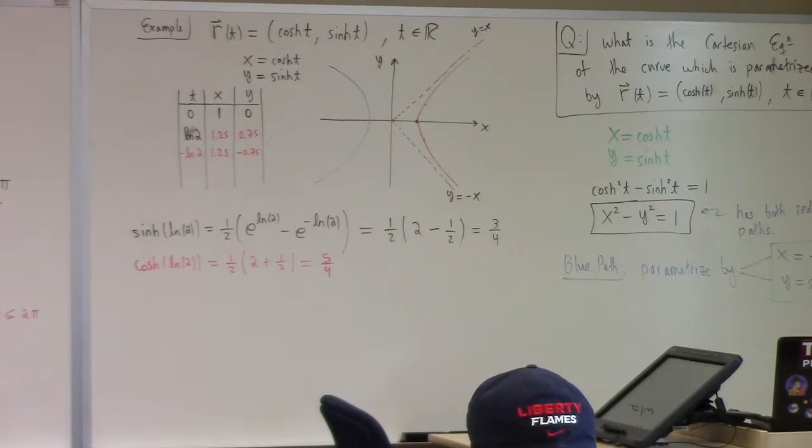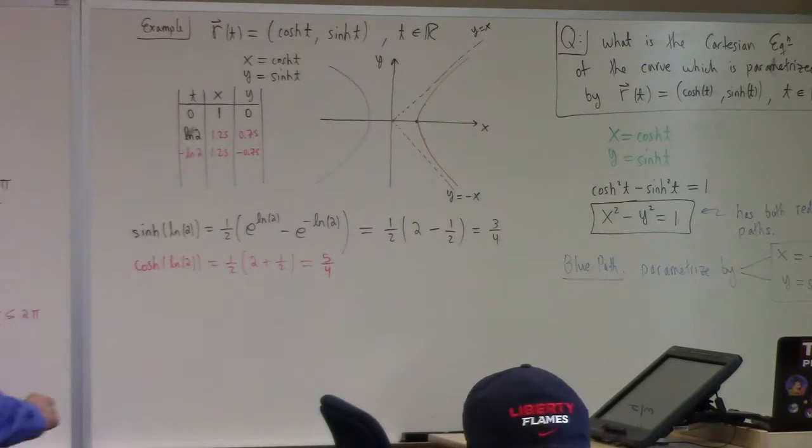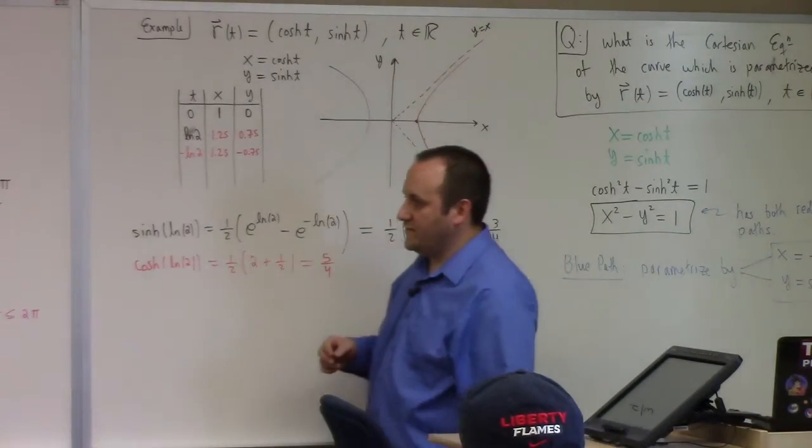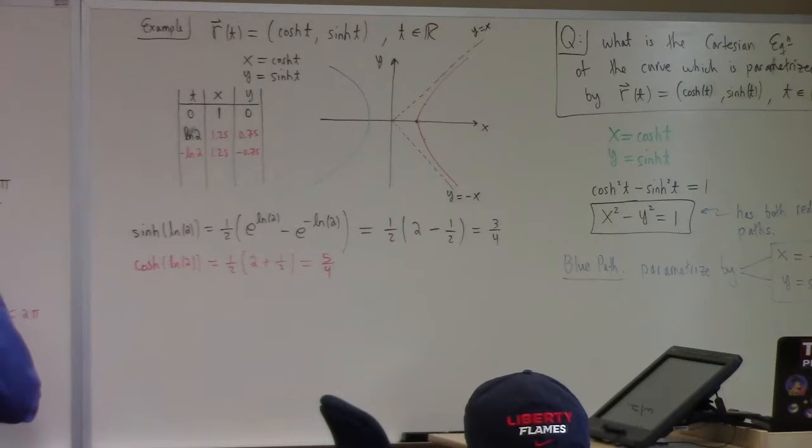So you're saying go from 0 to pi, but use minus 3 sine t instead? Yeah, that would also work. You know what else would work? To get this, I could also do r2 of s equals 3 cosine of e to the s, 3 sine of e to the s for s.